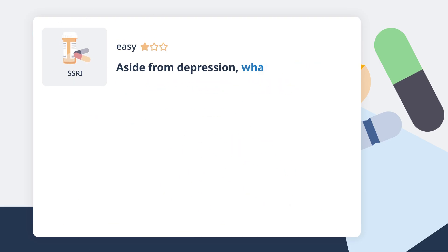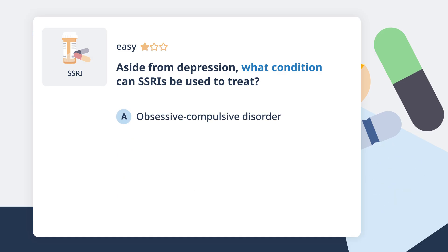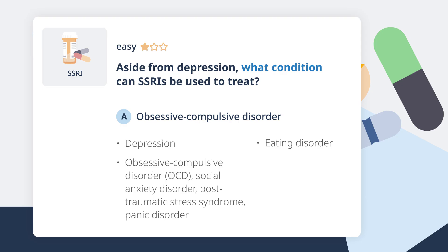Aside from depression, what condition can SSRIs be used to treat? We use them to treat depression, but SSRIs also have other benefits. They can help with OCD, social anxiety disorder, post-traumatic stress syndrome, and panic disorder. SSRIs can also help with eating disorders and some special types of depression like premenstrual dysphoric disorder, and lastly, enuresis.